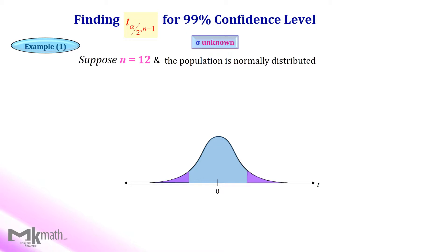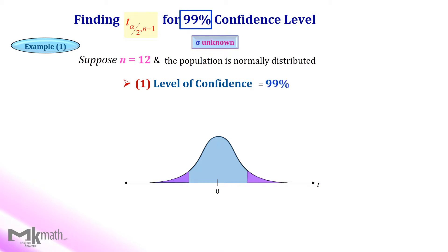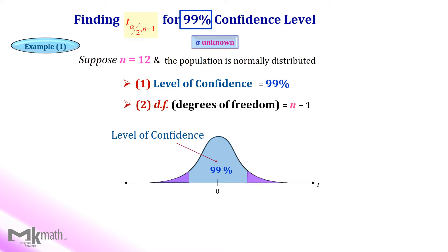Let's take a look at the first example: finding t-critical values for a 99% confidence level with a sample size of 12. Assume that the population standard deviation sigma is unknown and the population is normally distributed. Step 1: Identify the given confidence level — 99% for this question. Step 2: Find the degrees of freedom by subtracting one from the sample size 12, which is 11.